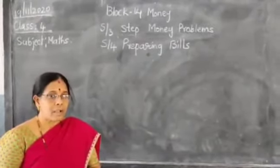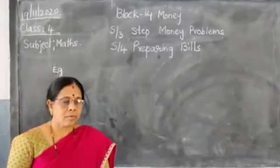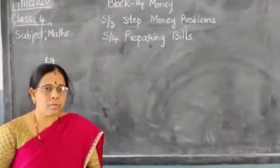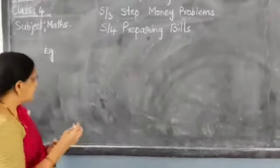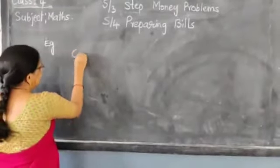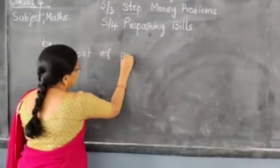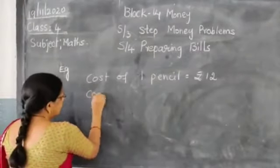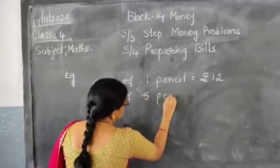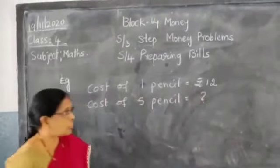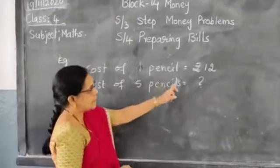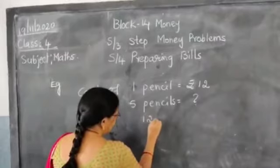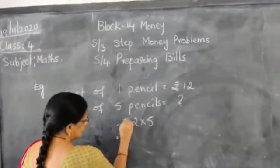Today I am going to show you one example. If you go to a stationery shop and buy one pencil, the cost is rupees 12. What is the cost of 5 pencils? Cost of 1 pencil is rupees 12. So cost of 5 pencils — we will multiply: 12 into 5.